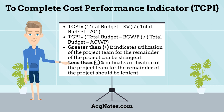The final cost variance type is To Complete Cost Performance Indicator, or TCPI. It can be calculated as: TCPI equals Total Budget minus Earned Value divided by Total Budget minus Actual Cost, or TCPI equals Total Budget minus Budgeted Cost of Work Performed divided by Total Budget minus Actual Cost of Work Performed. TCPI is an index showing the efficiency at which resources should be utilized for the remainder of the project. A TCPI greater than 1 indicates utilization should be stringent; a TCPI less than 1 indicates utilization should be lenient.